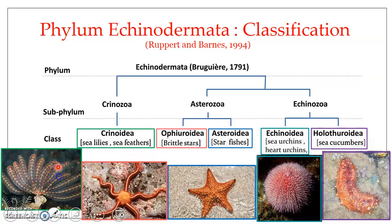Here you can see how a member of Krinozoa looks like. They include both extinct and extant living echinoderms, and they are popularly known as sea lilies, sea feathers, or feather stars. Sea lilies are sessile forms attached to some substrate, while sea feathers are free-swimming forms.